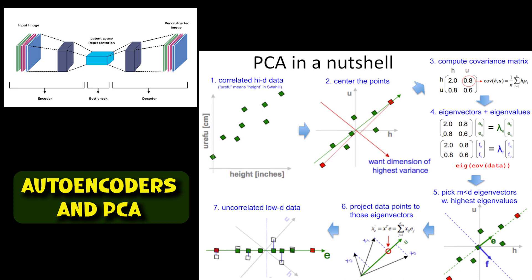What is the difference between autoencoders and PCA? So autoencoders and PCA are both dimensionality reduction techniques, which means they are used to reduce the number of variables in a dataset while preserving the essential features or structure of the data. However, they use different approaches to achieve this goal.